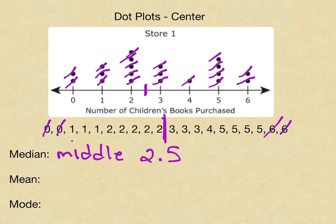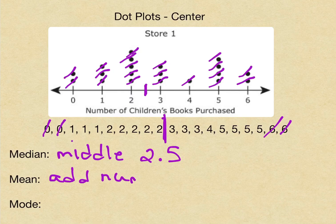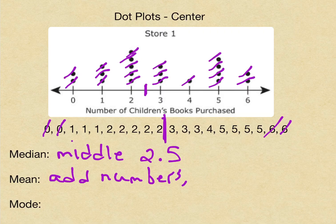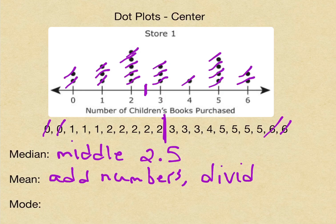Now for the mean. In this case, we would do the mean like we normally would. You would add up your 20 points, add up numbers, and then in this case, there's 20 points. So you would divide by 20.